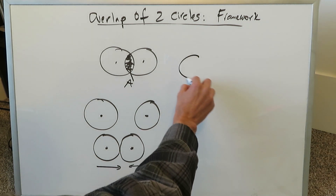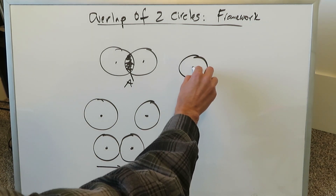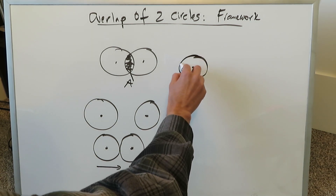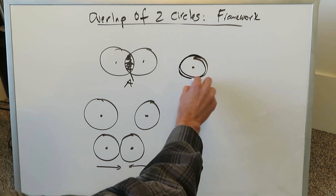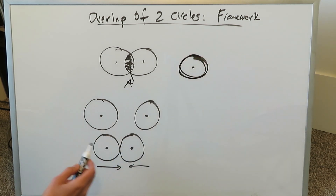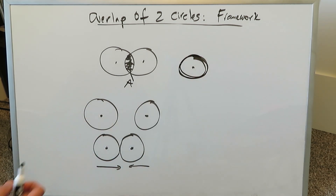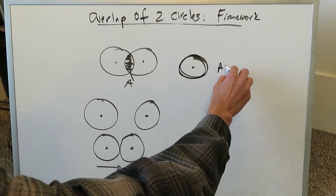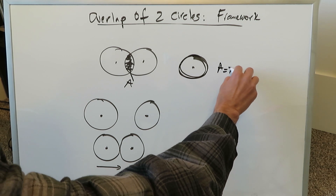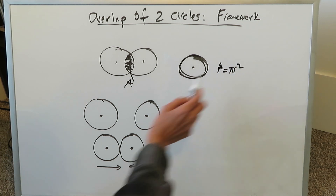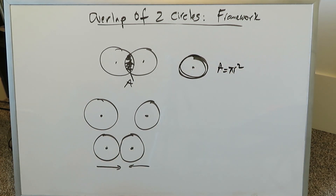Consider the situation where one circle has a complete overlap with the other. The area of overlap equals the area of that circle because you have complete overlap. We're looking at that intermediate situation where you have some overlap but not a complete overlap.